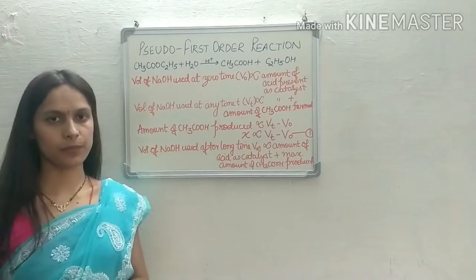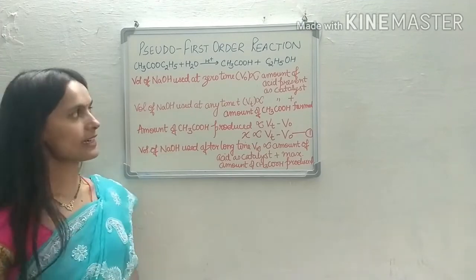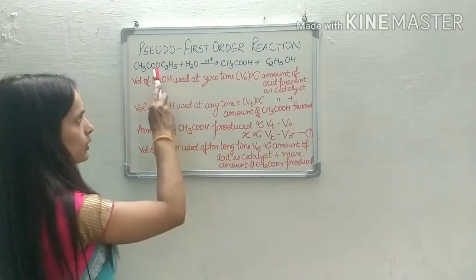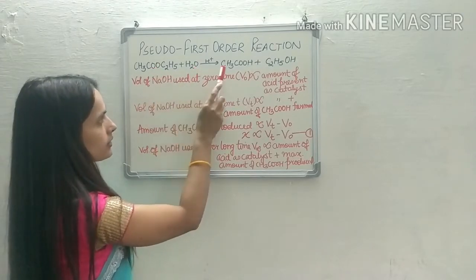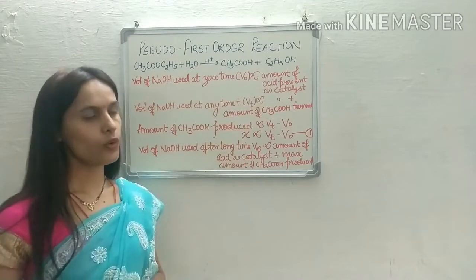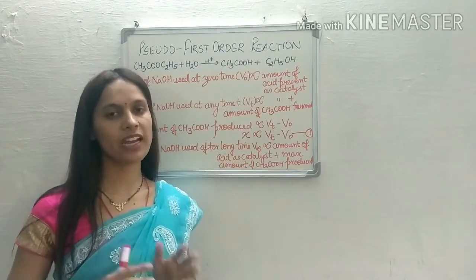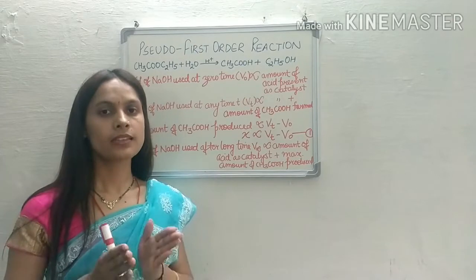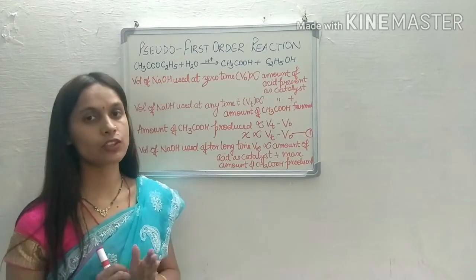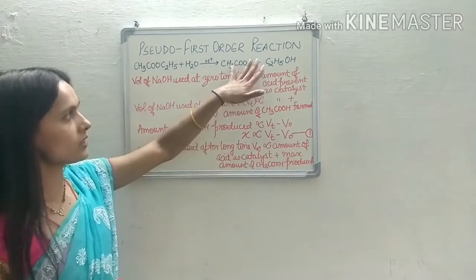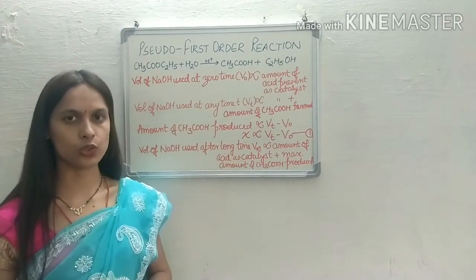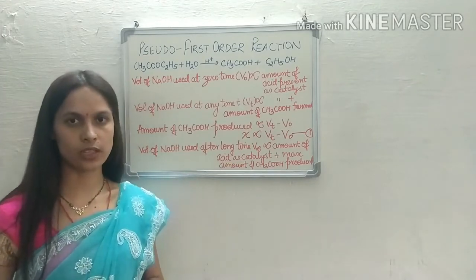Now we will study the kinetics of these two reactions separately. The first example is acid catalyzed hydrolysis of ethyl acetate. Ethyl acetate on hydrolysis gives two compounds: acetic acid and ethanol. The acetic acid produced is titrated against standard NaOH solution.